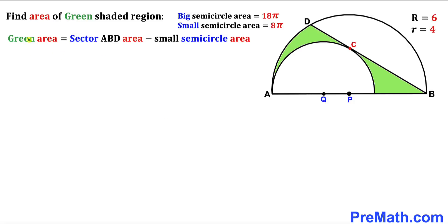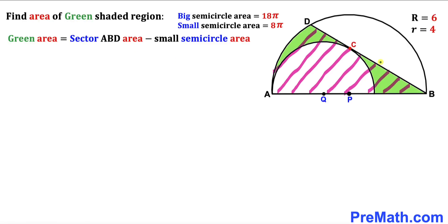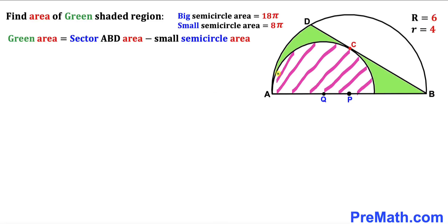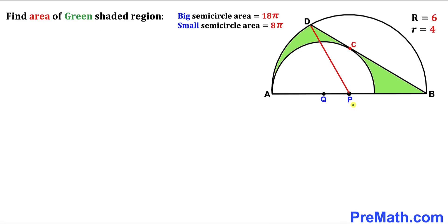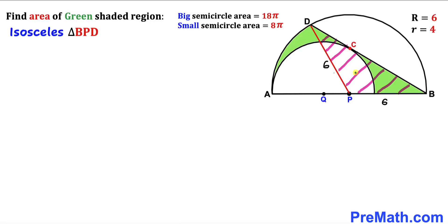The green shaded area equals the area of sector ABD minus the area of the small semicircle. The small semicircle area is already given as 8π, so our only task is to calculate the area of sector ABD. I've connected center P with point D — both PB and PD are radii of the big semicircle equal to 6, so triangle BPD is an isosceles triangle.